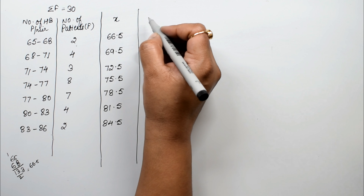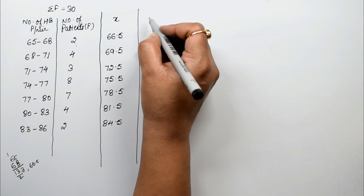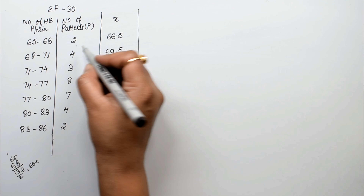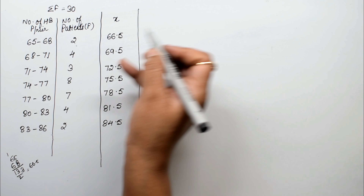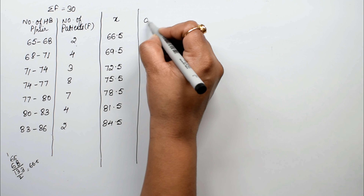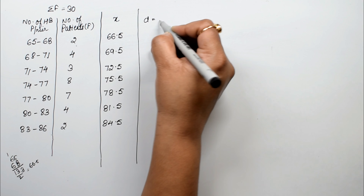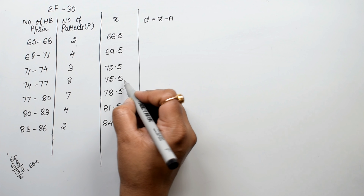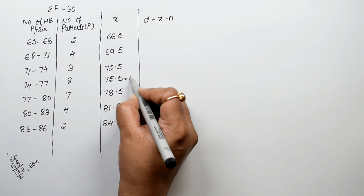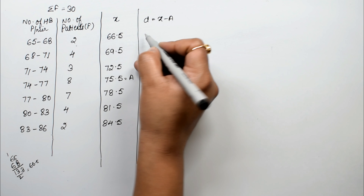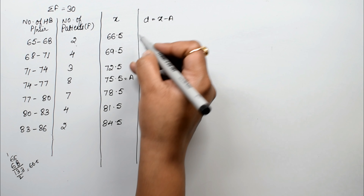Using the assumed mean method with assumed mean a equals 75.5, we compute d equals x minus a for each class mark. We subtract 75.5 from each class mark.